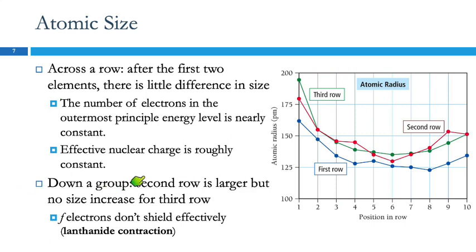Going down a group, the second row is larger than the first row. But the third row is pretty much the same as the second row — no size increase for the third row. This is because the f electrons that the third row of transition elements has don't shield the outer electrons effectively. So we don't see the usual shielding trend. That's known as the lanthanide contraction — the lanthanides are smaller than you would expect.